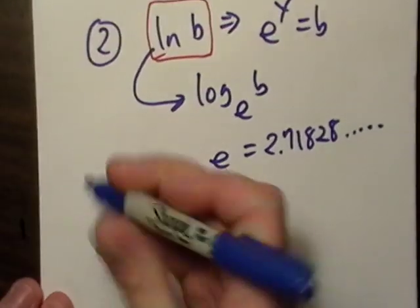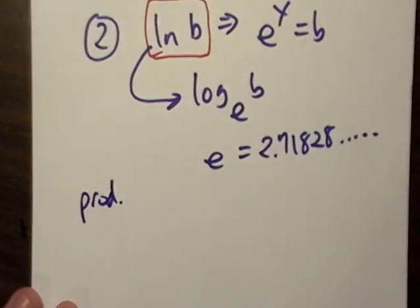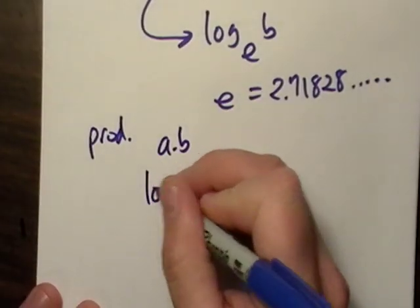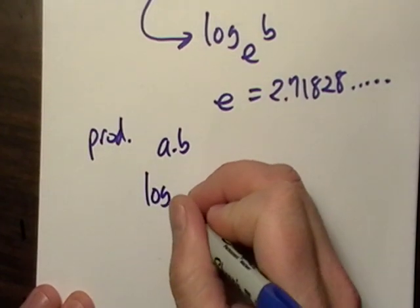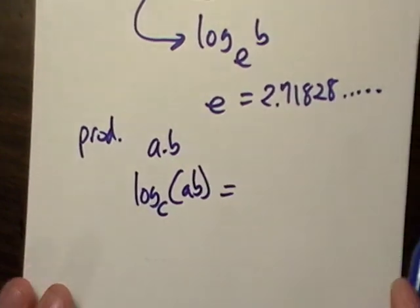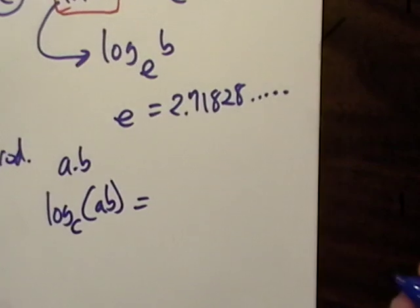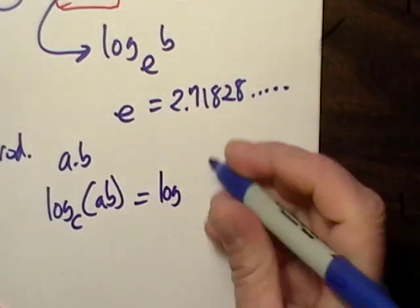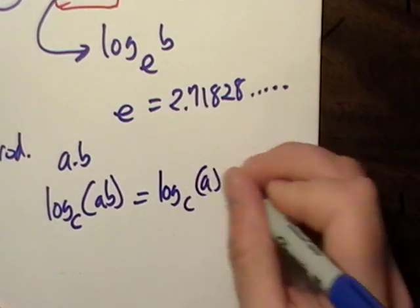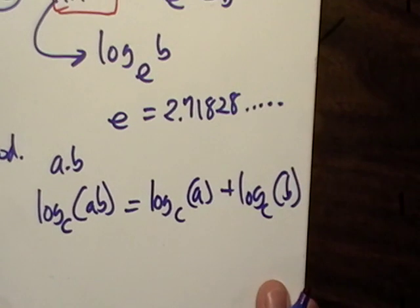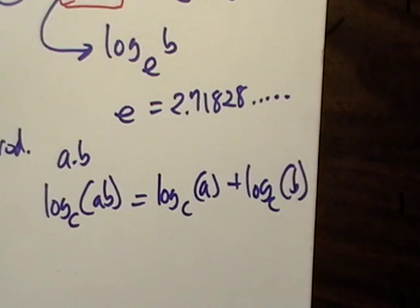Now I want to go to a product right here. A product is, you know, a times b. So, let's say you had the natural log of base c of a times b. Well, you can do a little bit of rewriting. And you can rewrite this as log c of a plus log c of b. So, you can do that. That's handy because sometimes you might need to use it to solve an equation.